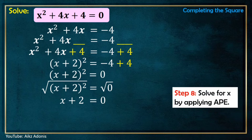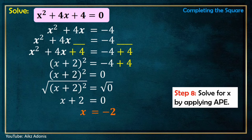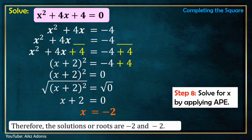Step 8: Solve for x by applying the addition property of equality, or commonly known as transposition. We transpose positive 2 to the right, so it becomes negative 2. Therefore, x = -2. Since in a quadratic equation we expect two values of x, the solutions or roots of x² + 4x + 4 = 0 are -2 and -2, meaning x = -2 is a repeated root.